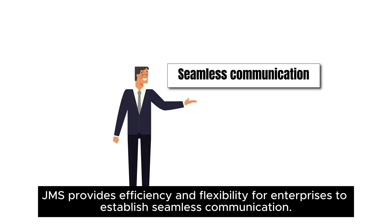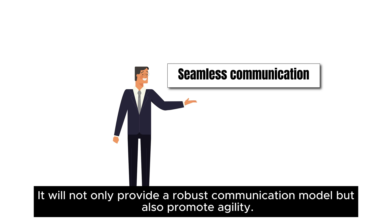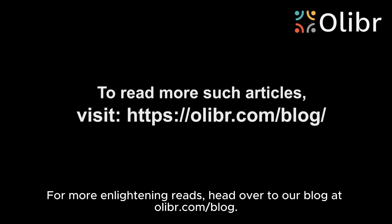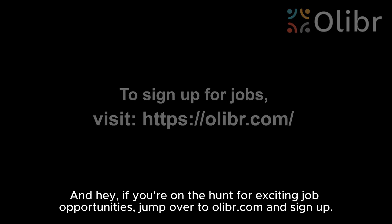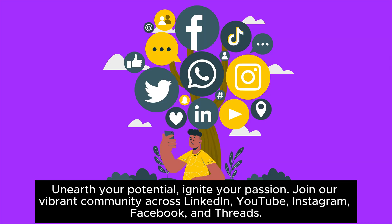Final words: JMS provides efficiency and flexibility for enterprises to establish seamless communication. It will not only provide a robust communication model but also promote agility. For more enlightening reads, head over to our blog at olibr.com/blog. And hey, if you're on the hunt for exciting job opportunities, jump over to olibr.com and sign up. Unearth your potential, ignite your passion.